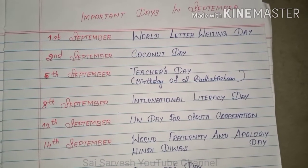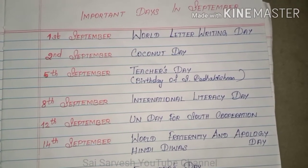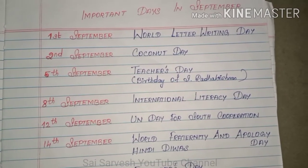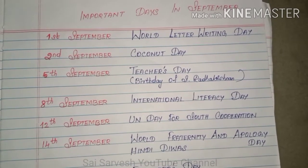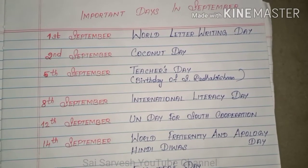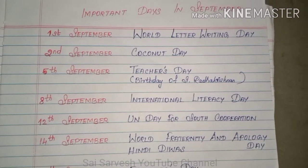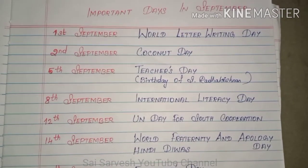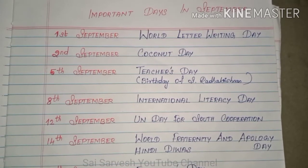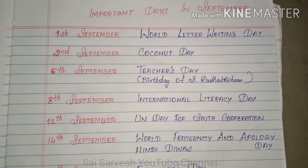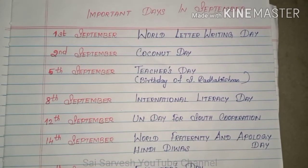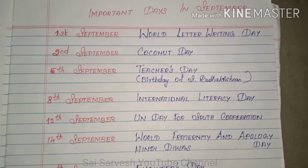8th September: International Literacy Day. 12th September: UN Day for South Cooperation. 14th September: World Fraternity and Apology Day.